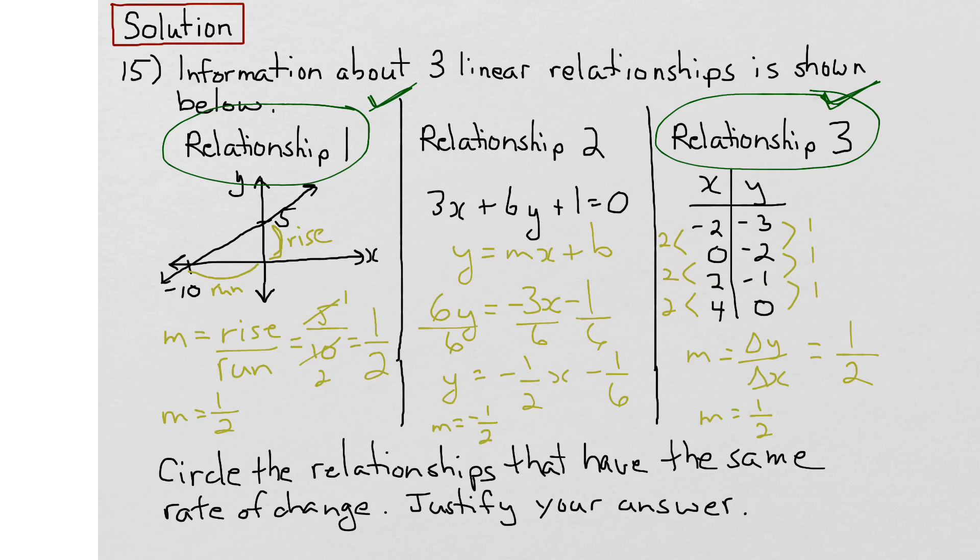Therefore, our answer is relationship 1. It has the same rate of change as relationship number 3. And we can circle both.